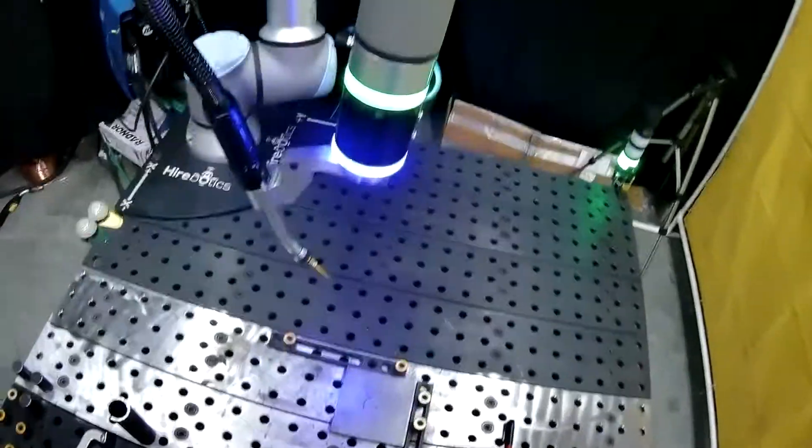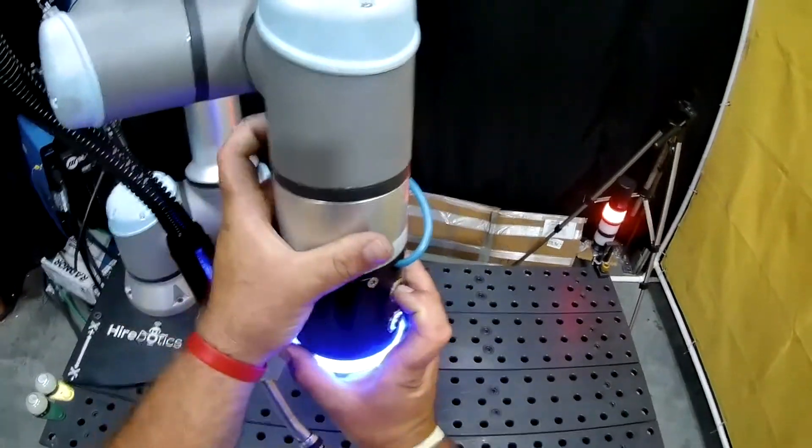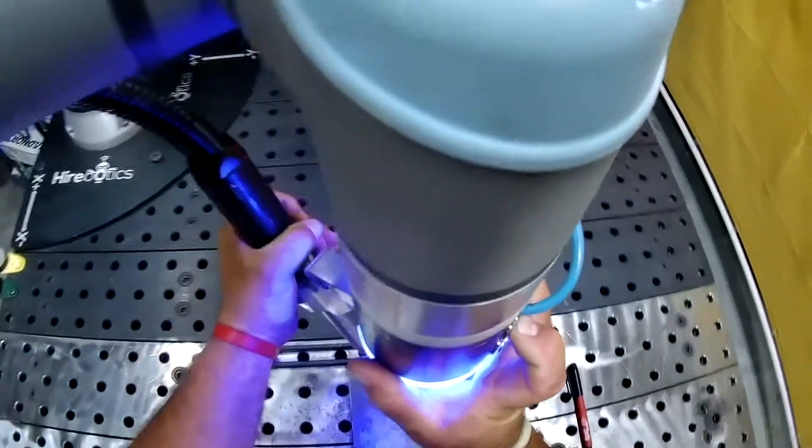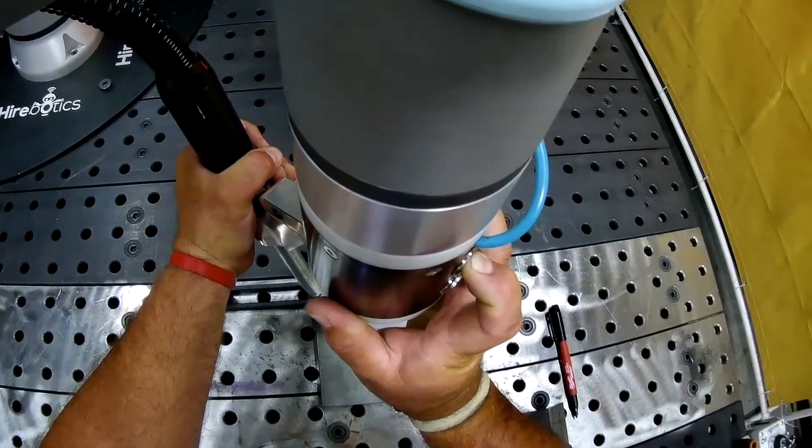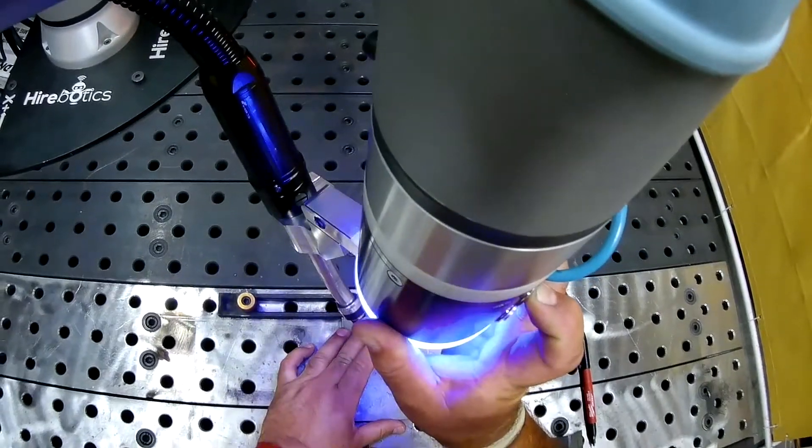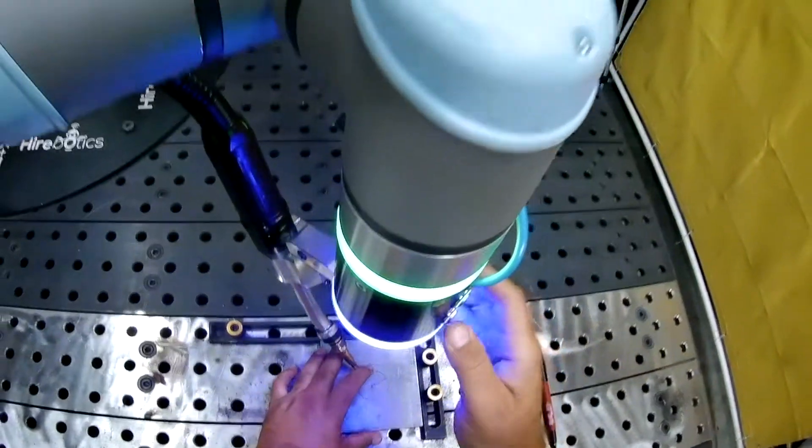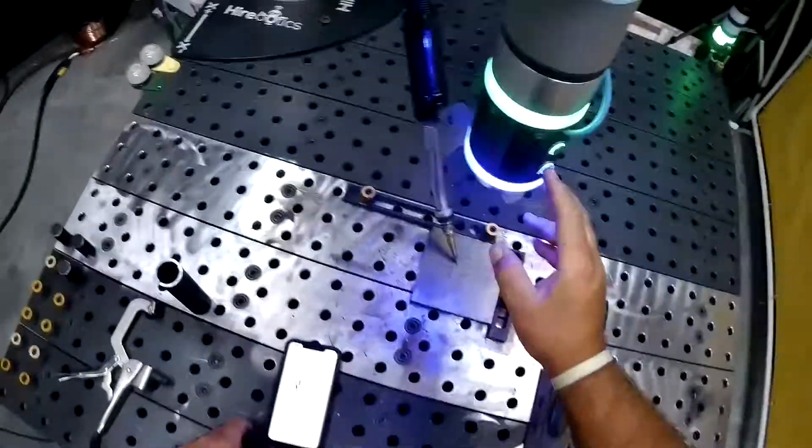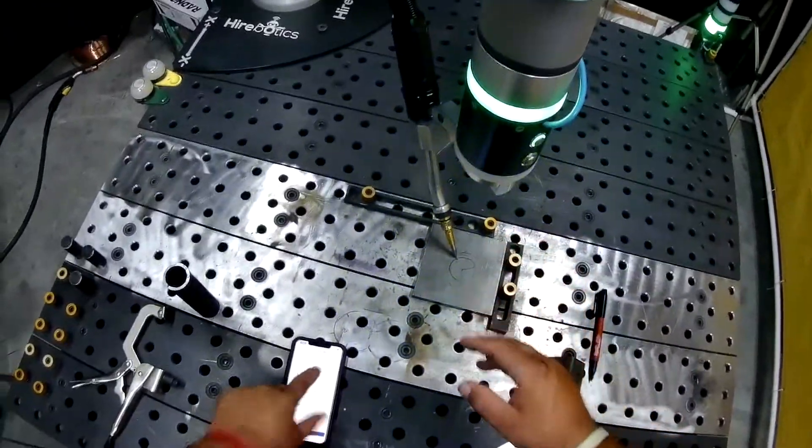So the first thing we do is teach our start point. Using our smart puck we're going to use the green button to free drive, put our teach tip, this is the 10 millimeter teach tip, onto where I want to start that weld, and then use the blue button to record the waypoint in the app.